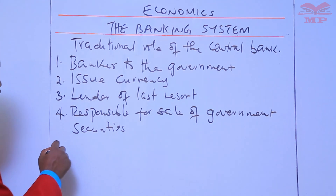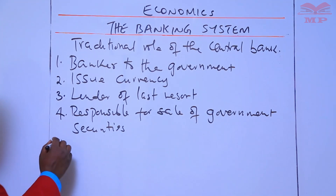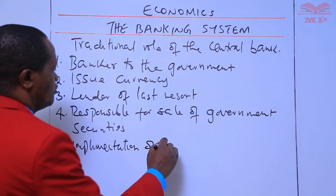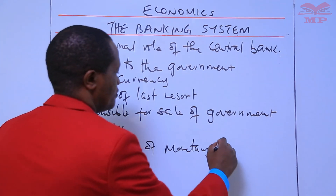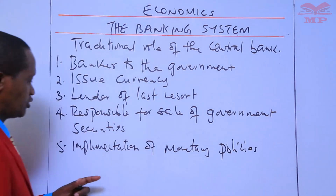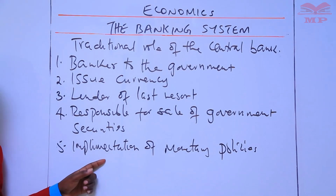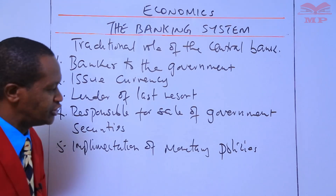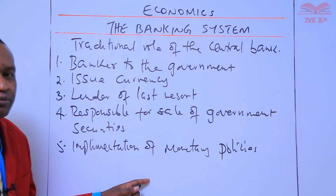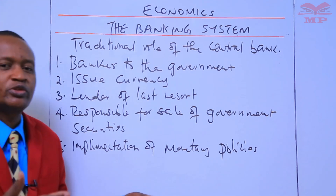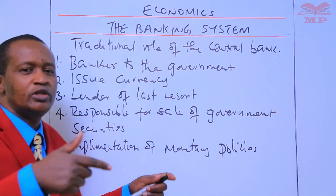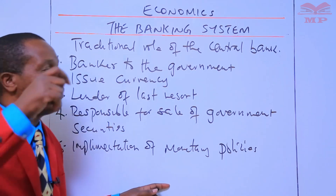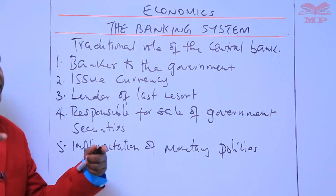Number five: implementation of monetary policies. The central bank is responsible for the implementation of monetary policies. Monetary policy is the regulation of the economy through the control of the quantity of money available and through the price of money — that means the rate of interest borrowers will have to pay.